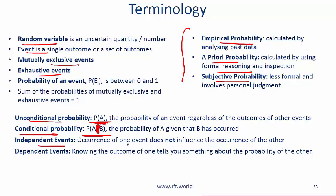Independent events: occurrence of one event does not influence the other and with dependent events, knowing the outcome of one tells you something about the other. So if A and B are independent, then probability of A given B is equal to probability of A. Because if we are saying that A and B are independent and B happening tells you nothing about A, then probability of A given B will be probability of A.